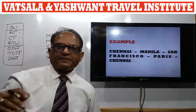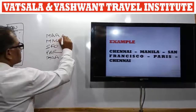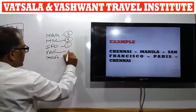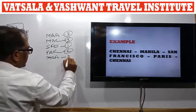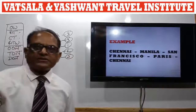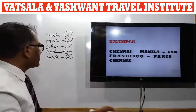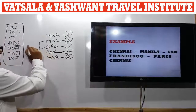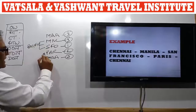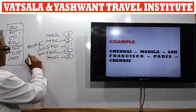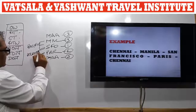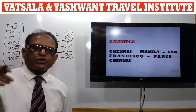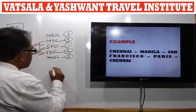Example 3 — First, we identify the areas: Chennai is in India, Area 3. Manila is in Philippines, Area 3. San Francisco is in USA, Area 1. Paris is in France, Area 2. Chennai is in India, Area 3. All three areas are involved. From Manila to San Francisco the passenger crossed the Pacific, and from San Francisco to Paris he crossed the Atlantic. The passenger is crossing both the Atlantic and the Pacific Ocean — the answer for this journey is RTW.